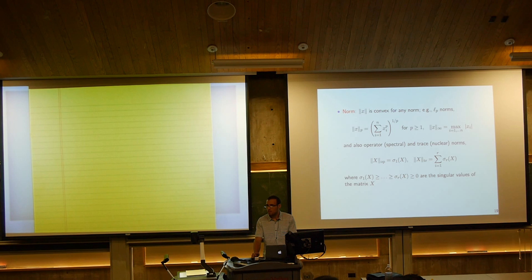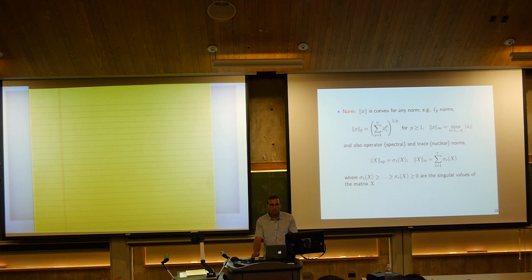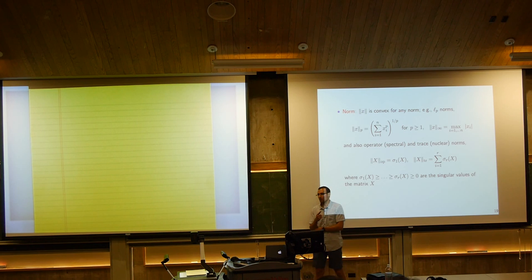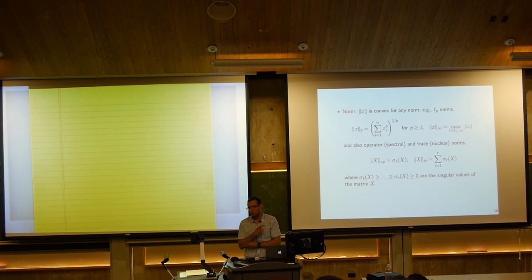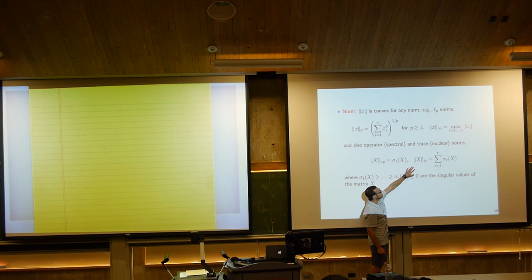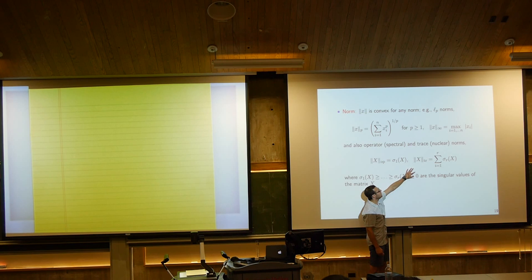A student asks about the operator norm for non-square matrices. The operator norm is the largest singular value — even for a square matrix, it's not the sum of diagonal elements. That's the trace. The trace norm is another go-to norm for matrices, defined as the sum of the singular values, where R is the rank of X.